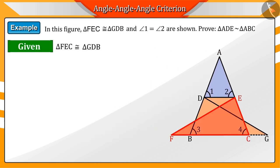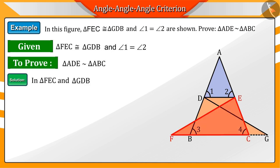From the question, we know that triangles FEC and GDB are congruent and angles 1 and 2 are equal. Because triangles FEC and GDB are congruent, we know that corresponding sides of congruent triangles are equal, by which we get equation 1.